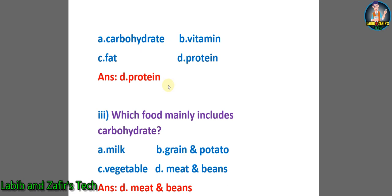So the answer will be D, Protein. Number 3: which food mainly includes carbohydrate? A. Milk, B. Grain and potato, C. Vegetable, D. Meat and beans. The answer will be D, meat and beans mainly includes carbohydrate.